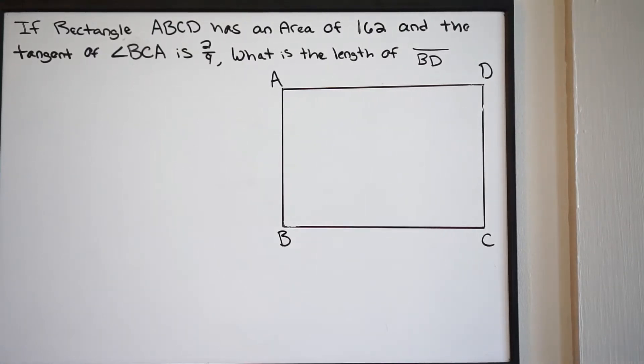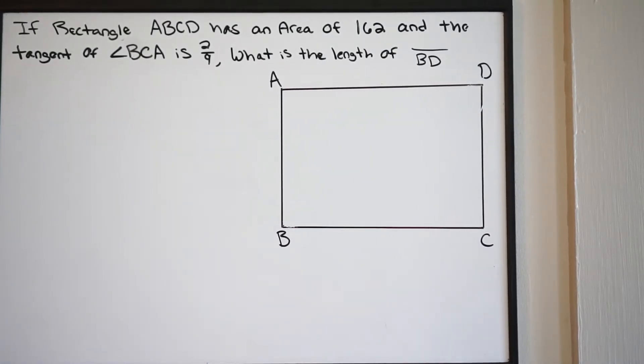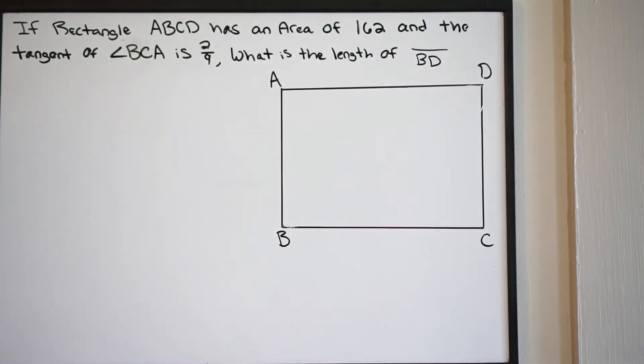In this example, we're dealing with an SAT-style question, and we have to use our knowledge of trigonometry. If rectangle ABCD has an area of 162, and the tangent of angle BCA is 2 over 9, what is the length of BD? Essentially what they want here is this length BD, and we're given this rectangle that has an area of 162.